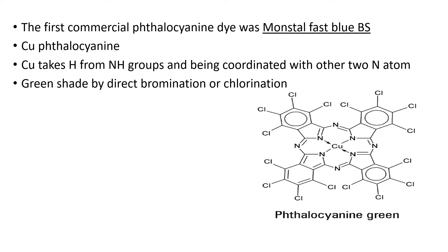Phthalocyanine is written as H2Pc. It is itself a colored substance, blue-green in color. It is the oldest phthalocyanine dye. A key difficulty is that the solubility of phthalocyanine dye is very low. To improve solubility, we substitute some substituents on the aromatic system.